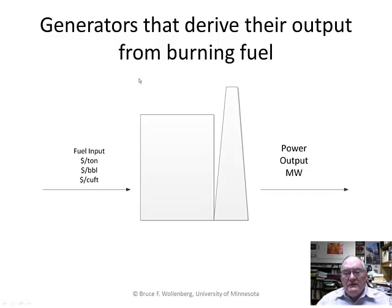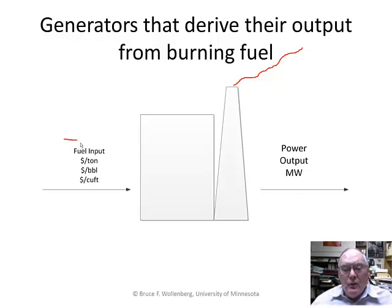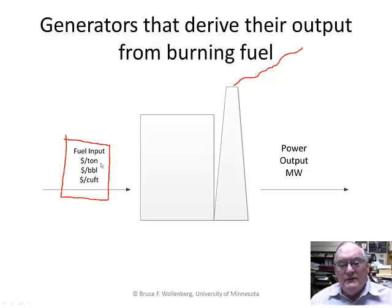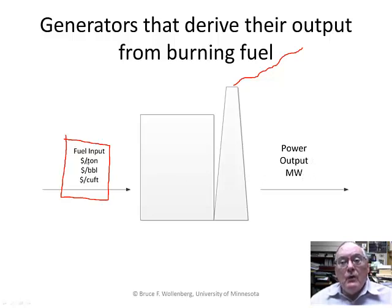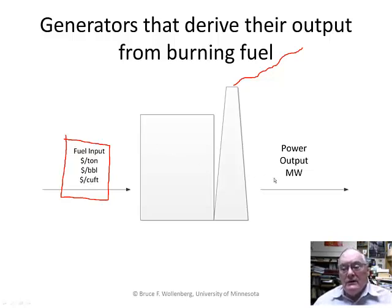Let's start with the very basics of a power plant. Here we have a power plant — we can picture smoke coming from this smokestack. When you have a power plant, in order to get any power out, you have to put fuel in. Fuel costs money, so fuel costs so many dollars per ton, dollars per barrel, or dollars per cubic foot of gas. Power output is in megawatts, and the more megawatts, the more fuel per hour you have to put into the unit. So many dollars translates to so many megawatt hours of energy that the power plant puts out.